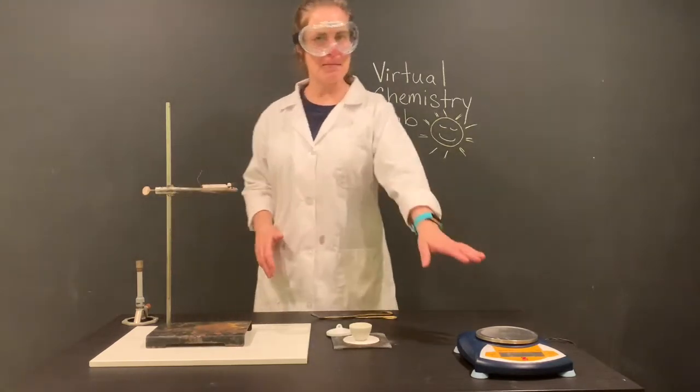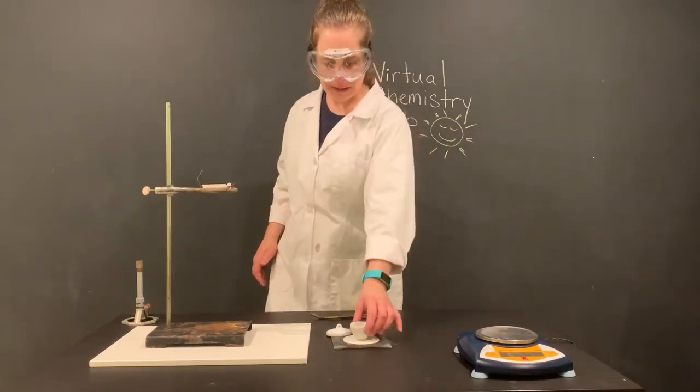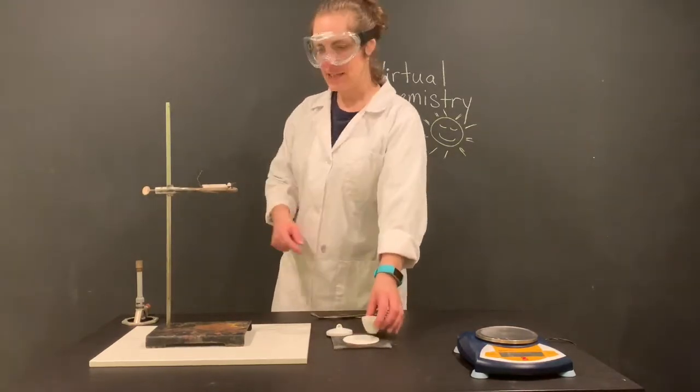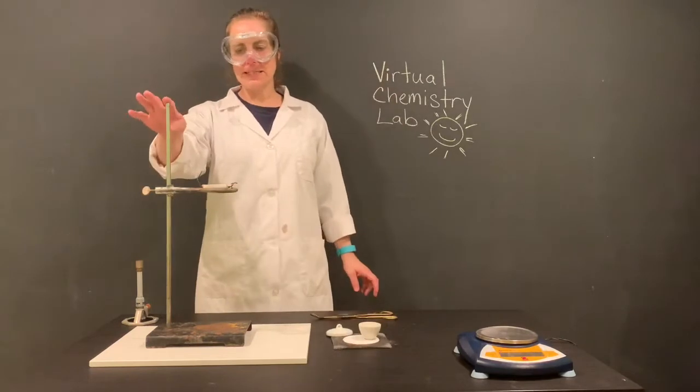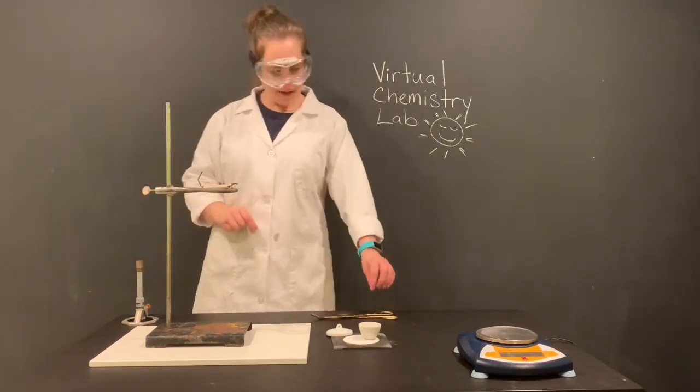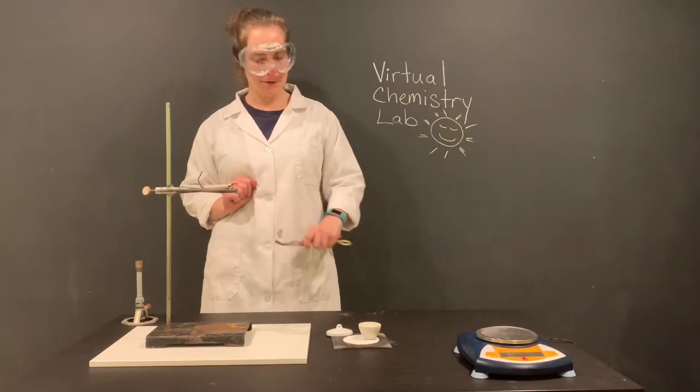You see here I've got my electronic balance, I've got my crucible and top, a wire gauze, I've got my ring stand, my ring, my clay triangle, a pair of crucible tongs, and my trusty Bunsen burner.